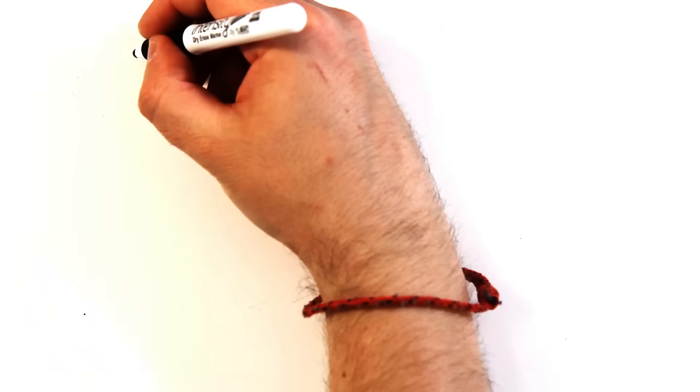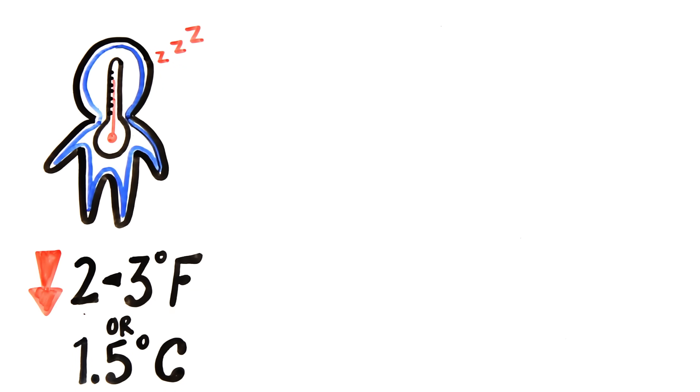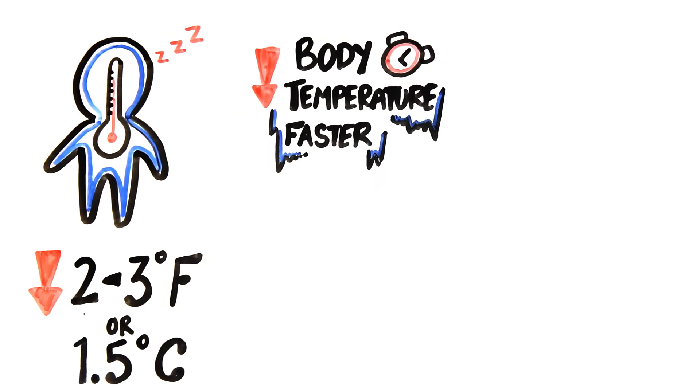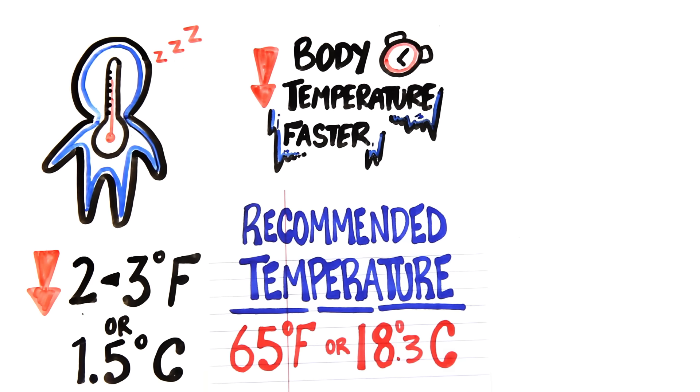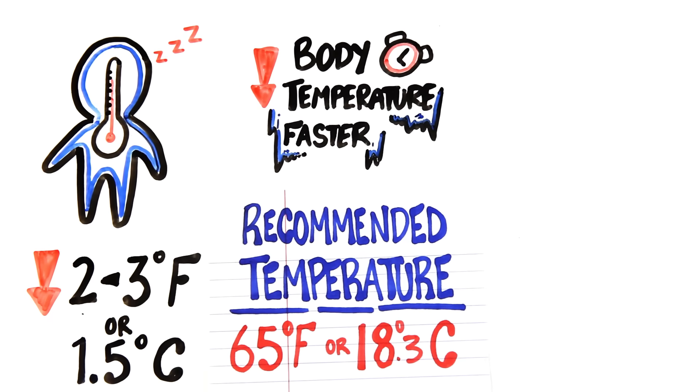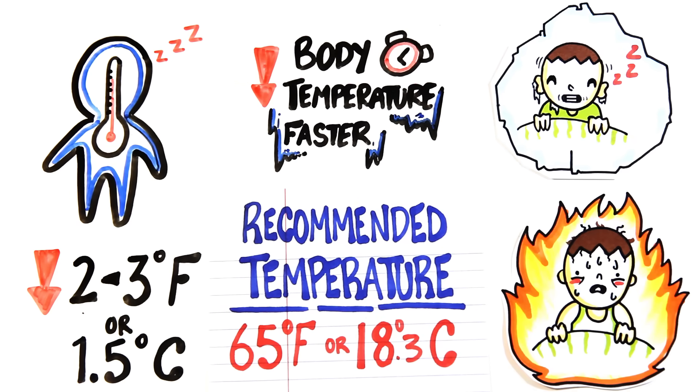Even just to initiate sleep, your body has to drop 2-3 degrees Fahrenheit or 1.5 degrees Celsius. And so, being colder actually helps bring your temperature down faster. It might shock you, but the recommended temperature is around 65 degrees Fahrenheit or 18.3 degrees Celsius for your room. Going too cold isn't great either, but it doesn't have the same disruptive effects on falling asleep or your sleep quality as a hot room does.